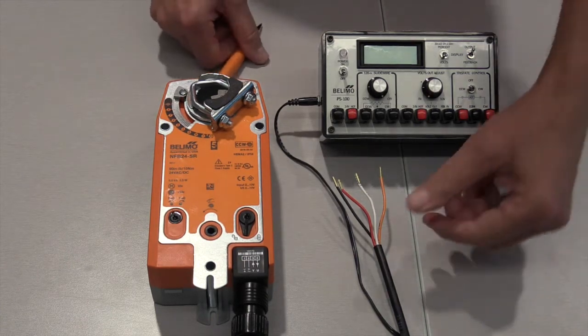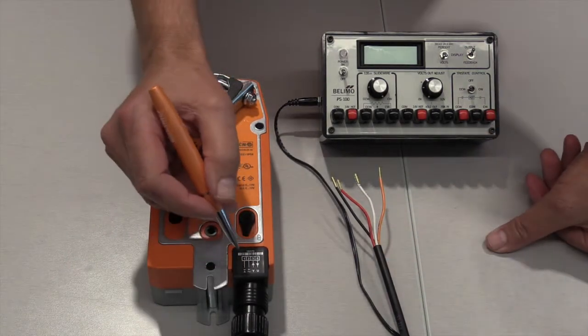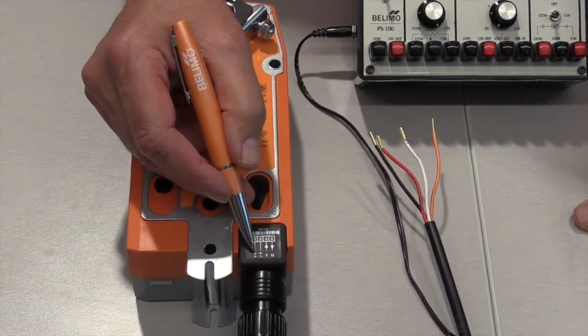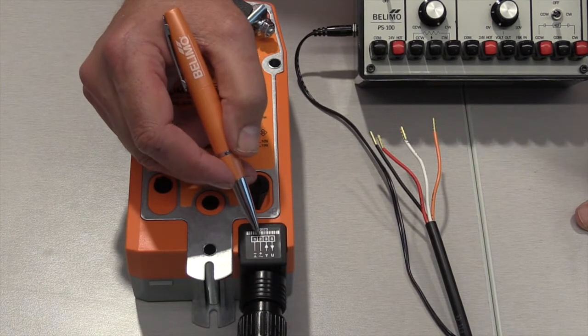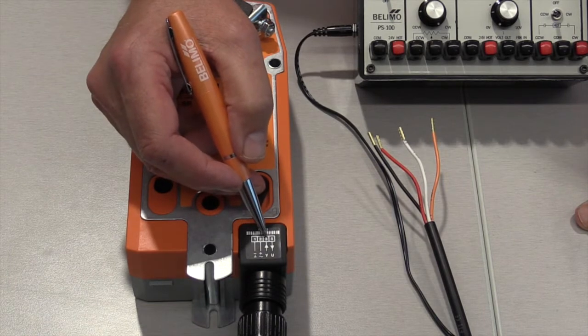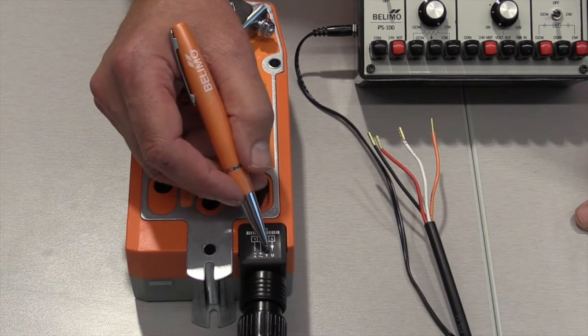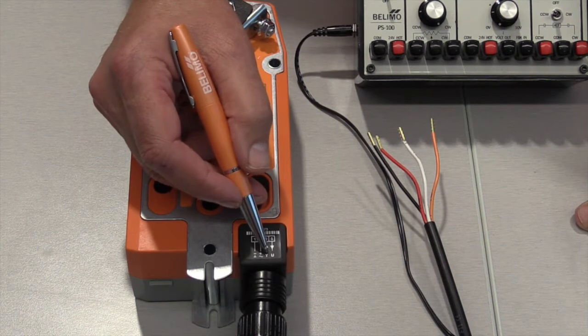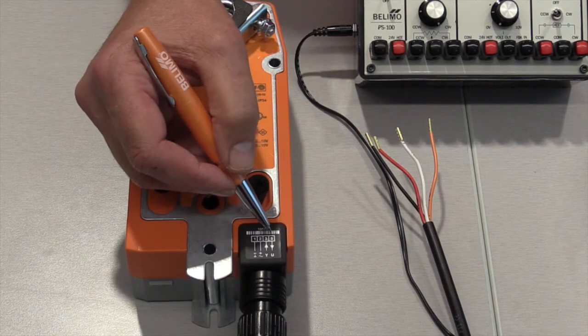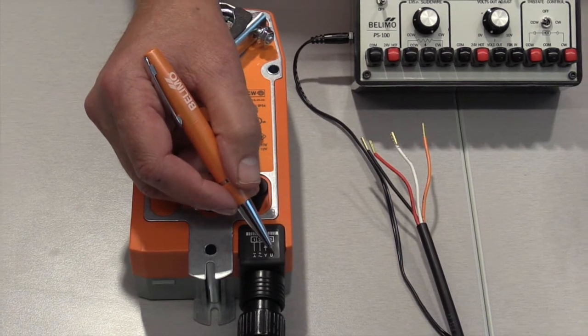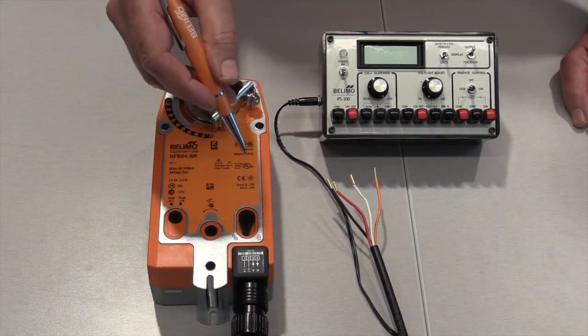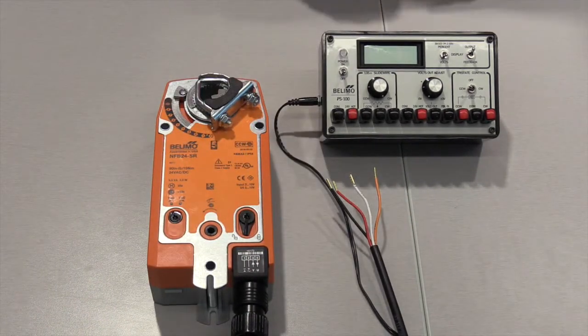It's a 24 volt actuator so I'm able to use the PS100 power supply that puts out a 24 volt power signal. I want you to look on this black portion of the wiring here. We have number one which is the common or negative, number two which is positive or 24 volt hot, number three which is a letter Y and that is the control signal in from the building management system or the PS100 in this case, and the very last one is number five with a letter U and that's the feedback wire that goes out from the actuator back to the building management system or today to the PS100.